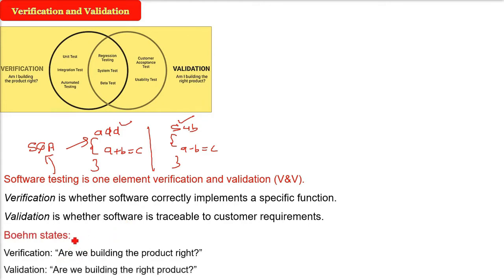So Boehm states: verification is, are we building the product right? That is, have we done enough work that the functions are working properly? Validation means, are we building the right product? That is, whatever user wants, are we making for him?